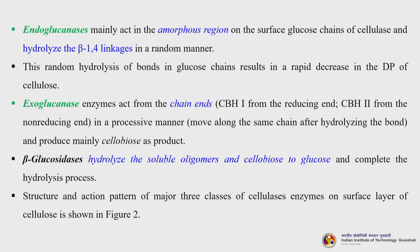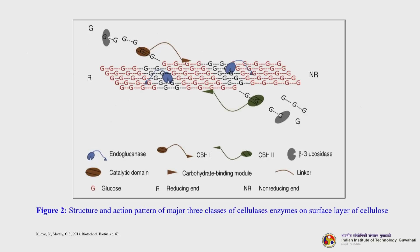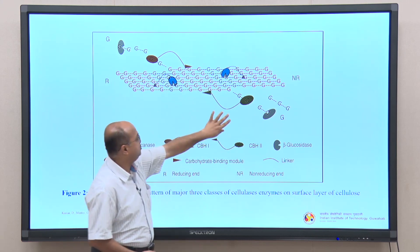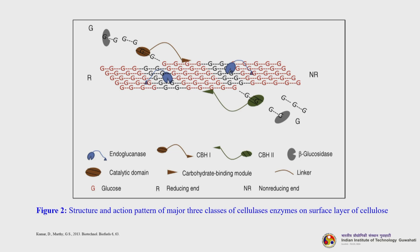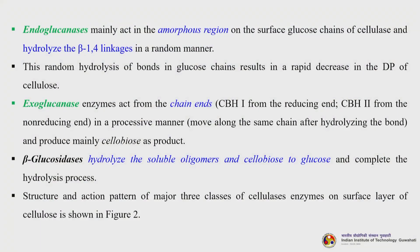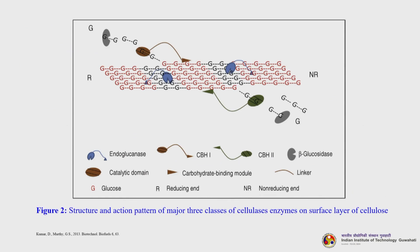Exoglucanases act from the chain ends: CbH1 acts from the reducing end and CbH2 from the non-reducing end in a processive manner, moving along the same chain after hydrolyzing the bond and producing mainly cellobiose as the product. Beta-glucosidases then hydrolyze the soluble oligomers or cellobiose to glucose, completing the hydrolysis process. This final step works on cellobiose produced by CbH1, CbH2, and oligomers to form glucose.